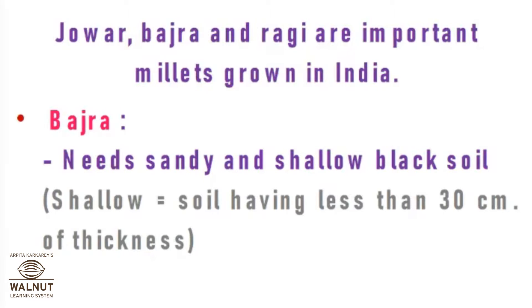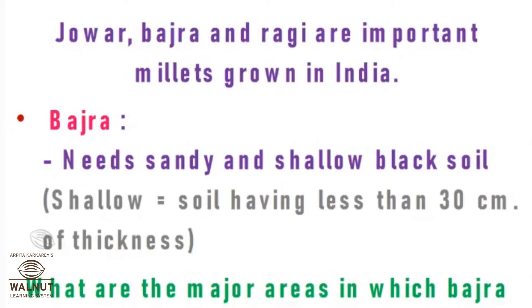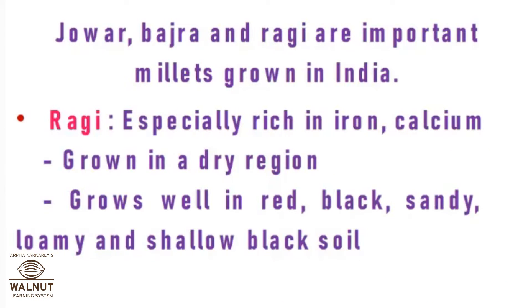Bajra needs sandy and shallow black soil — shallow means having less than 30 centimeters of thickness. Note the states where it is grown. There are a lot of map works; if you find it confusing to keep maps separate, it is easier to put it in a table. Write the heading, the name of the crop, and then list out the states. Next is ragi.